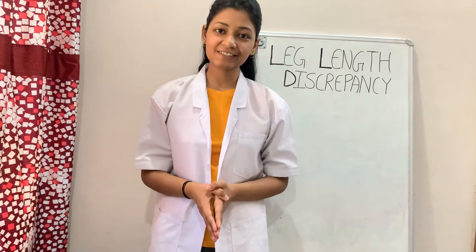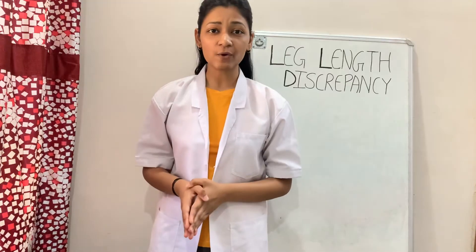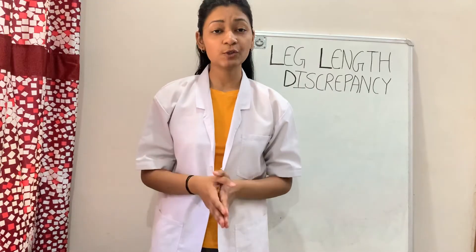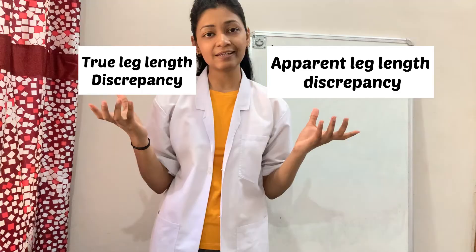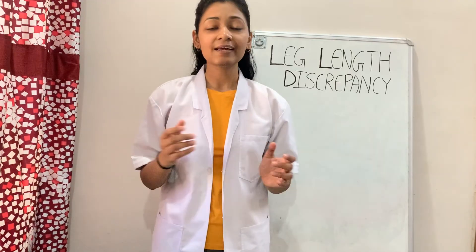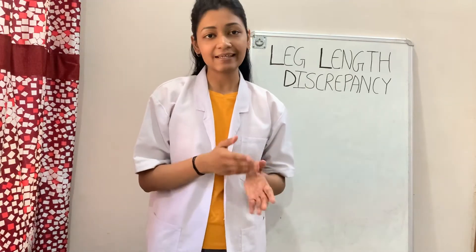Hello everyone and welcome back to my YouTube channel, Physio's Healing Touch. Today I will clear your doubts regarding two terms that you might have come across in your physiotherapy clinic: true leg length discrepancy and apparent leg length discrepancy. Leg length discrepancy means if one leg is shorter than the other, that is considered as leg length discrepancy, and it is of two types.